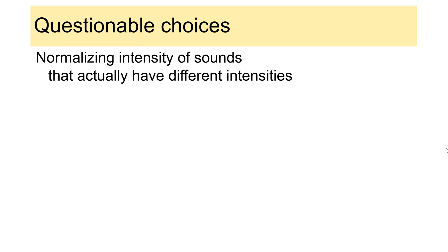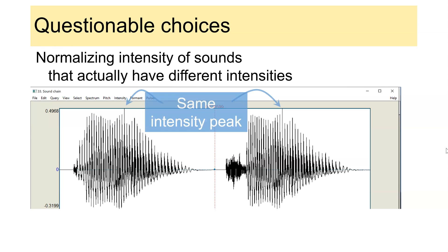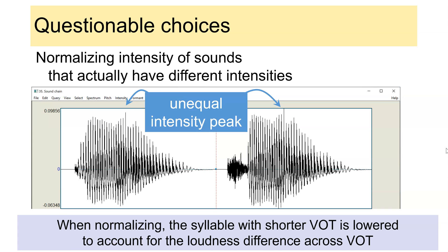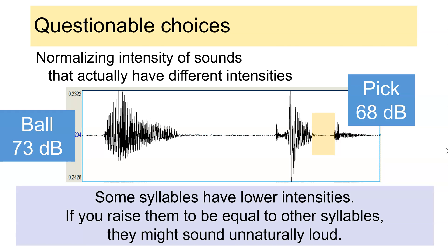Very often you'll see people equate RMS amplitude for all their sounds, presumably with the goal of equating loudness. But for short sounds, equating RMS does not actually do that. Consider these sounds have the same absolute intensity peak in the vowel, but the sound on the right has longer VOT — meaning there's a legitimate reason for reduced intensity in the voiceless sound. RMS normalization does not mean equalizing loudness. Loudness is not the same as intensity, particularly because the same intensity is perceived to have different loudness depending on the frequency, but also because some syllables just have lower intensities. For example, the words 'ball' and 'pick' have different intensities and shouldn't be equated. 'Ball' is voiced throughout with a low vowel, which tends to be louder. 'Pick' not only has voiceless segments but also has a silent gap during the stop closure. So if you force them all to have the same intensity, you're actually introducing unnatural differences between syllables.